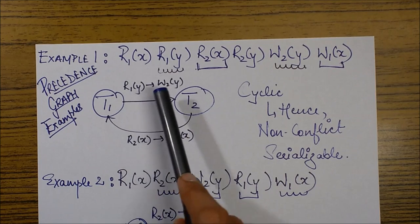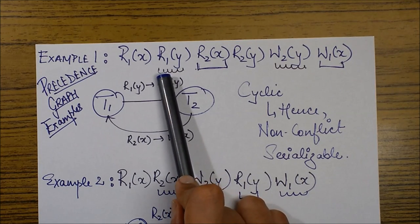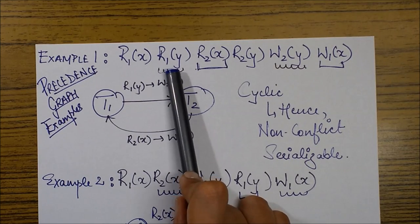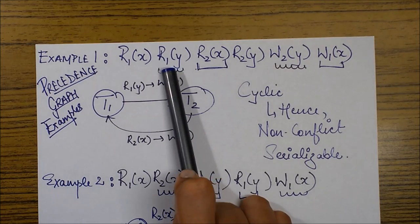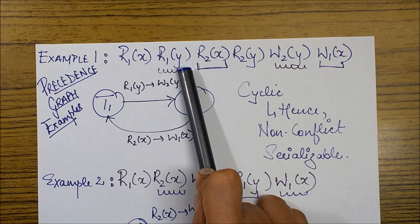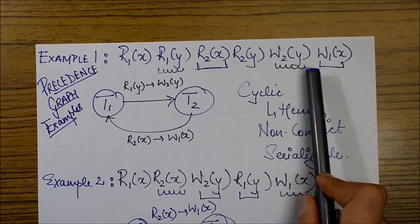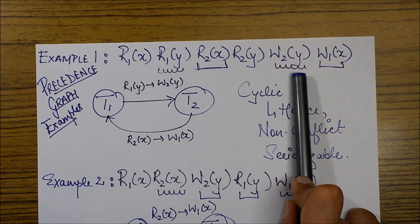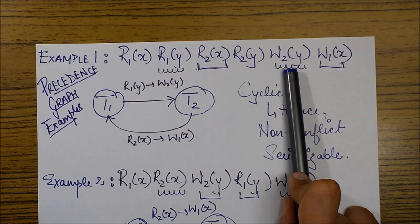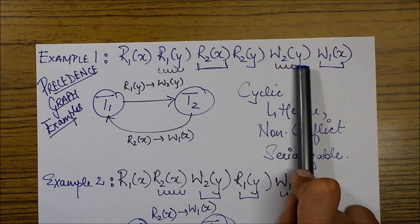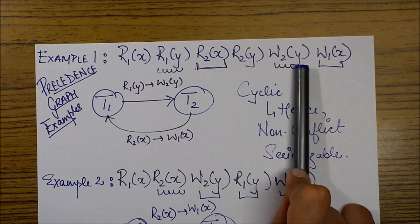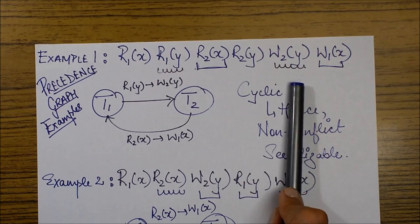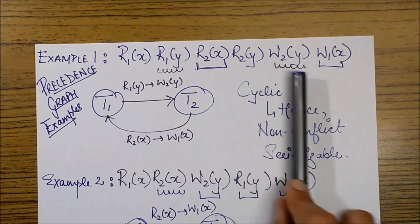In this example we can see that R1 basically means the read operation for first transaction. Now this read operation is being executed on this data item Y and then we have W2Y. W2Y basically means a write operation on transaction 2 on data item Y. So now this operation is being performed on the same data item Y and it is a read write pair.